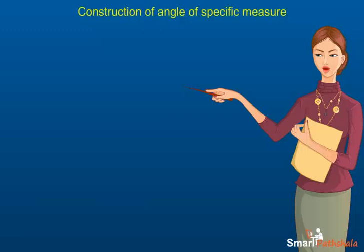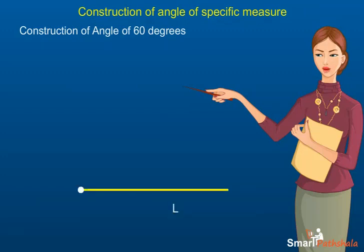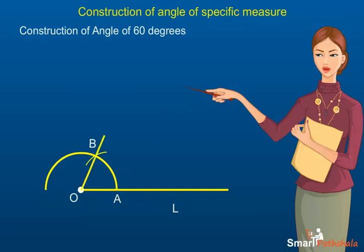Let us now learn to draw some angles of specific measure. 1. 60 degrees. Step 1: Draw a line L of any measure. Step 2: Mark a point O on it. Step 3: With O as center, draw a semicircle of any radius. Let the semicircle cut the line at A. Step 4: With A as center and the same radius, draw an arc that cuts the semicircle. Let it cut at B. Step 5: Join OB. Angle AOB is the required 60-degree angle.